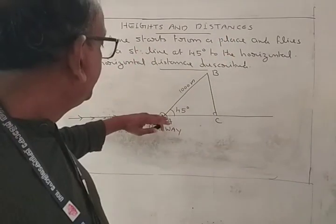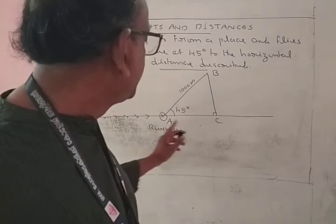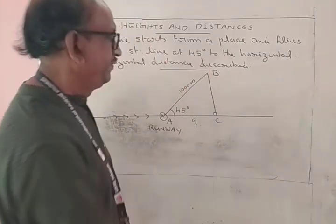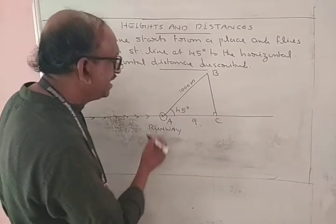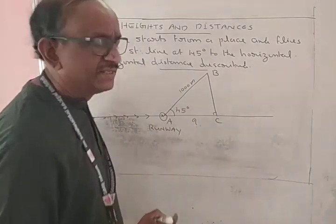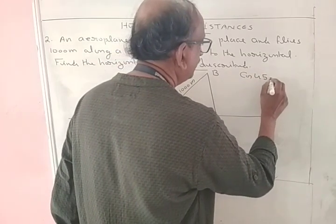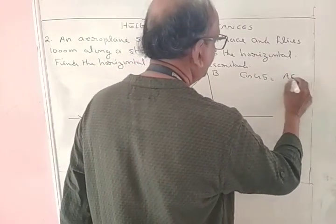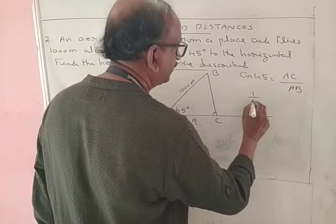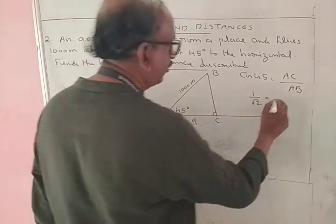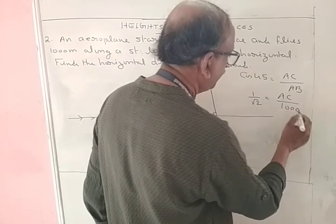We have to find the horizontal distance described, AC. Here AC is the adjacent side of 45 degrees and 1000 meters is the hypotenuse of this track. Therefore cos 45 is equal to adjacent side AC divided by hypotenuse AB, which is 1000. Cos 45 is 1 by root 2, so AC equals 1000 divided by root 2.